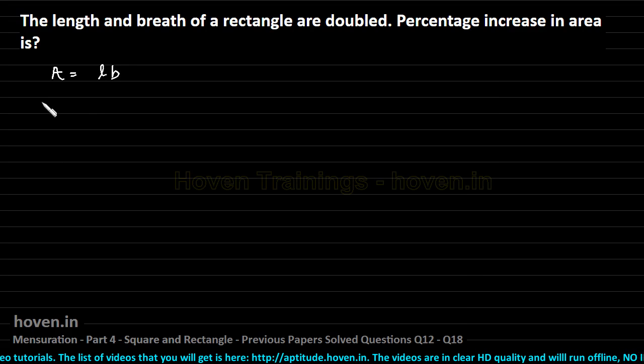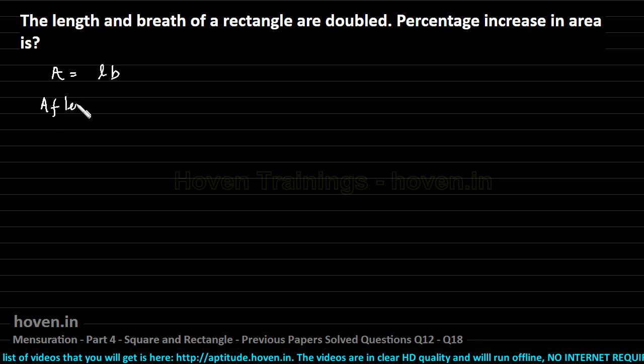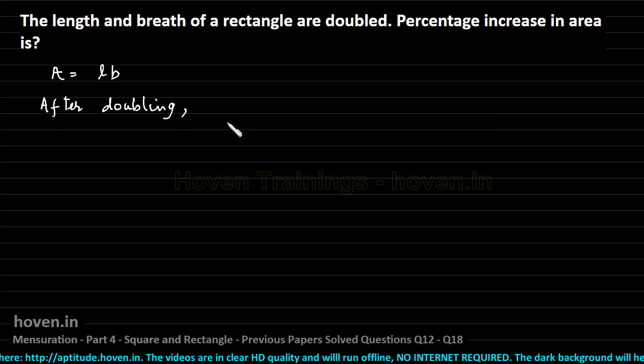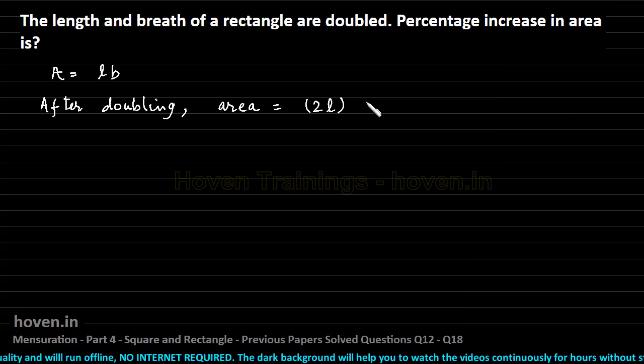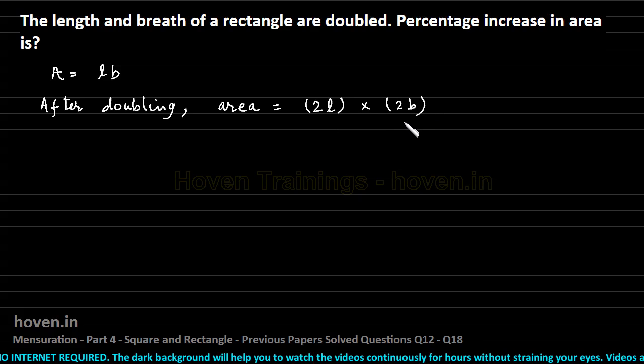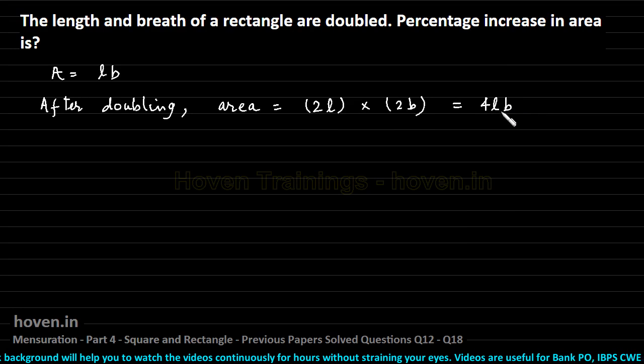The area after doubling becomes equal to 2L because the length has been doubled, multiplied by 2B because the breadth has also been doubled, which becomes equal to 4LB. This is what we have. Now from here we can find out the original area was LB.